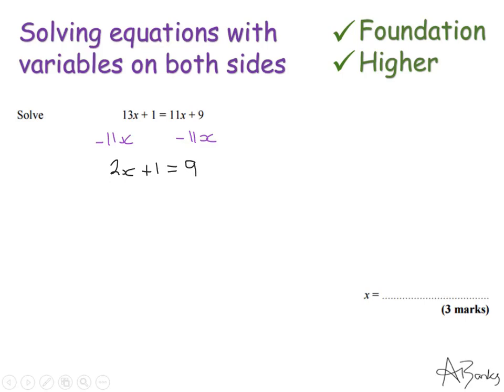Now I've turned this into a basic equation that I can solve, so you should already know how to do this next bit. I'm going to take away 1 from both sides. That gives me 2x equals 8 and then I'm going to divide by 2. So my final answer is x equals 4.